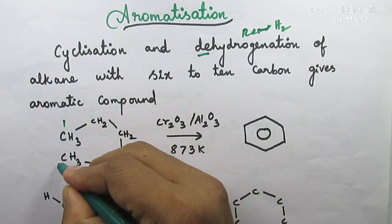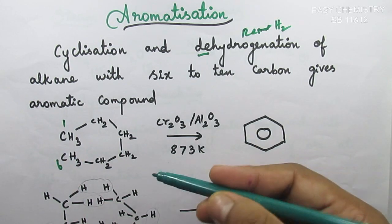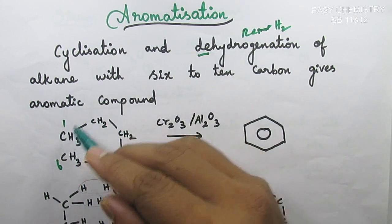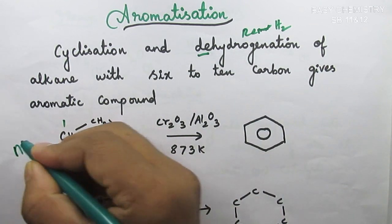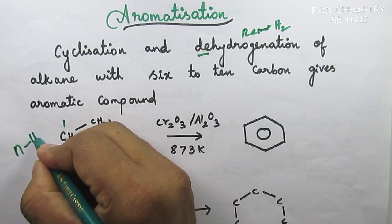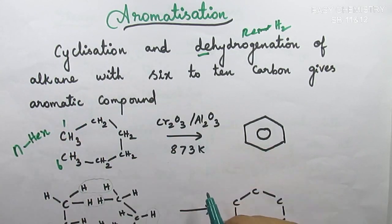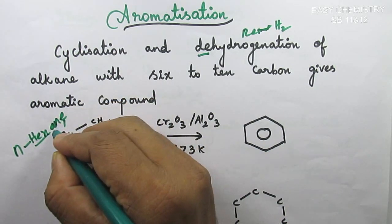Hydrogen is removed. Six carbon compound, it's linear. If we say it's linear, n-hexane. There are 6 carbons, so hex. Single bond between carbon-carbon, so A-N-E, hexane.